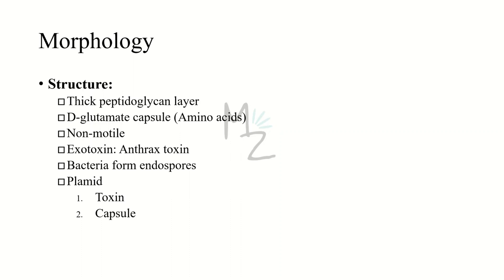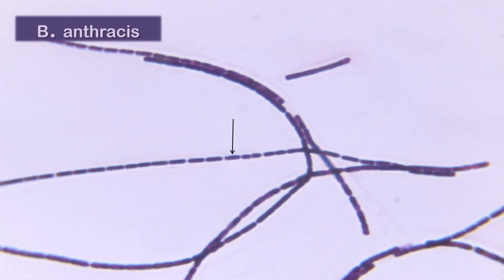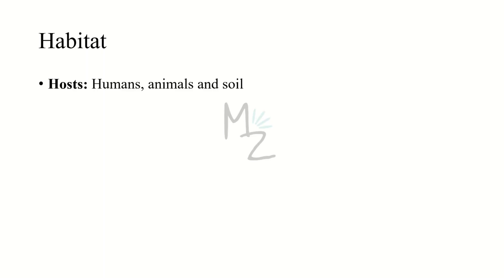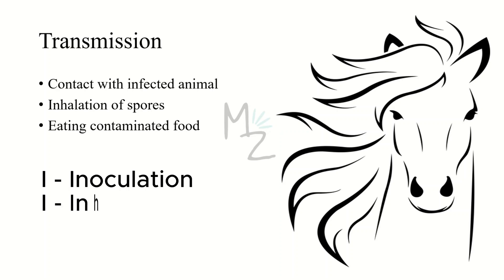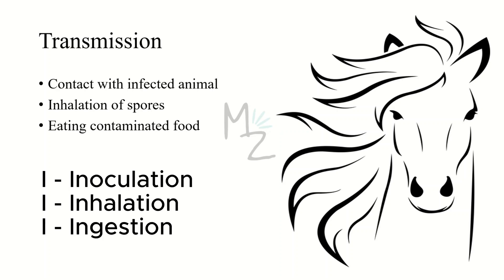This bacterium releases endospores. The spores of this organism persist in soil for years, which is why soil is its primary habitat. It is also found in animals — most common in animals but rare in humans, because humans only get infection when there is a chance of zoonosis. For transmission, remember three I's: first, inoculation — related to skin. Contact with infected animals; if there is a cut in the skin, spores from infected animal skin or from soil can enter.